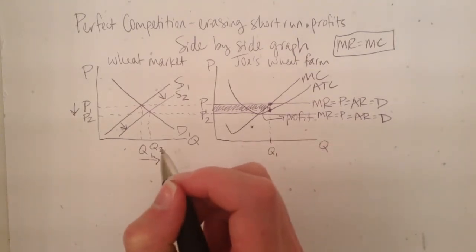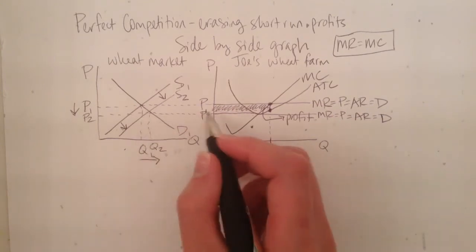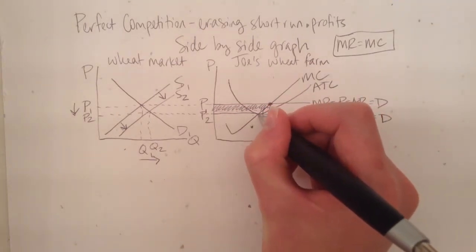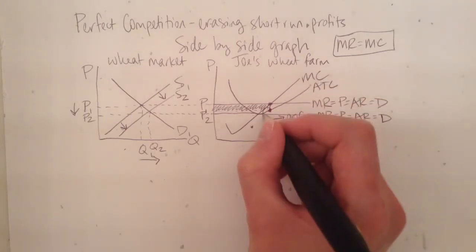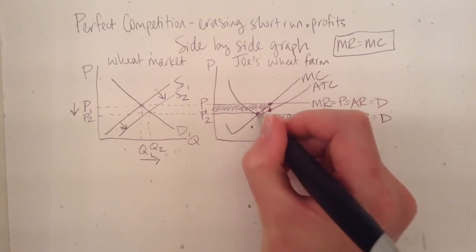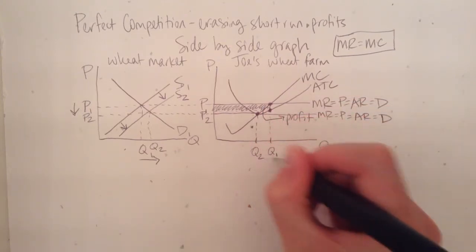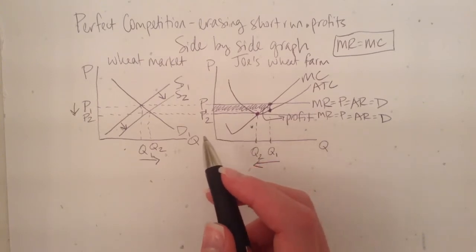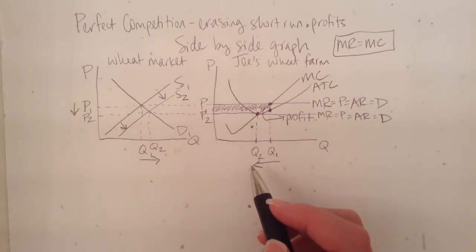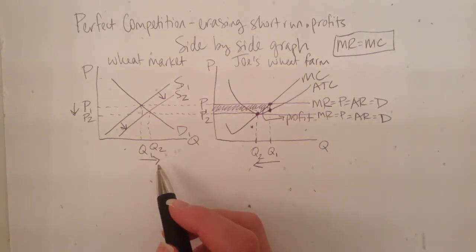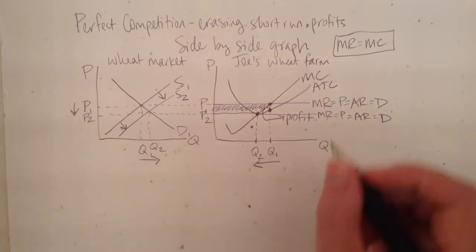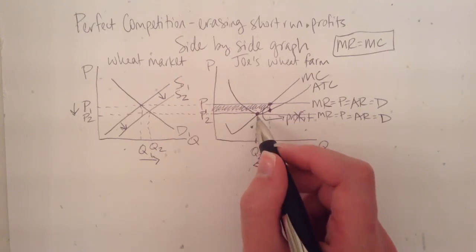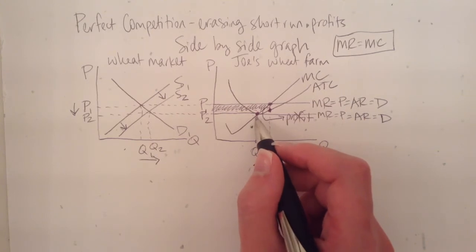So now we can see that the increased supply has driven the price to be tangent to average total cost, meaning that Joe is earning a normal profit or zero economic profit. The marginal cost and marginal revenue now intersect here. So basically, from Joe's perspective, he's going to produce less because he's getting a lower price. And due to his costs and his marginal revenue, that's going to drive him to produce less. But overall, there's more firms in the market, so that's why the overall market quantity has increased. And now Joe is no longer earning a profit because there's no gap between average total cost and price where Joe is now producing.